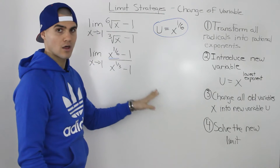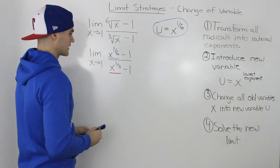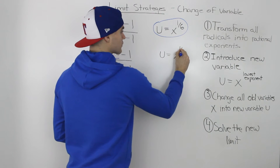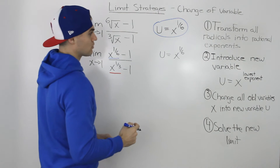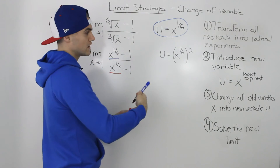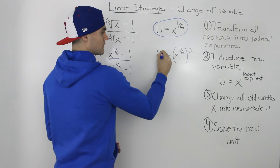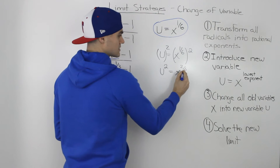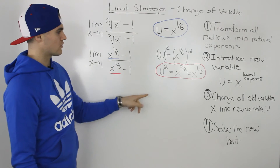Step three: change all the old variables and the limit into the new variable u. Starting with x to the power of one over three — we rewrite our original expression: u equals x to the power of one over six. We can raise both sides to the power of two, because one over six times two gives two over six, which simplifies to one over three. So u squared equals x to the power of one over three.